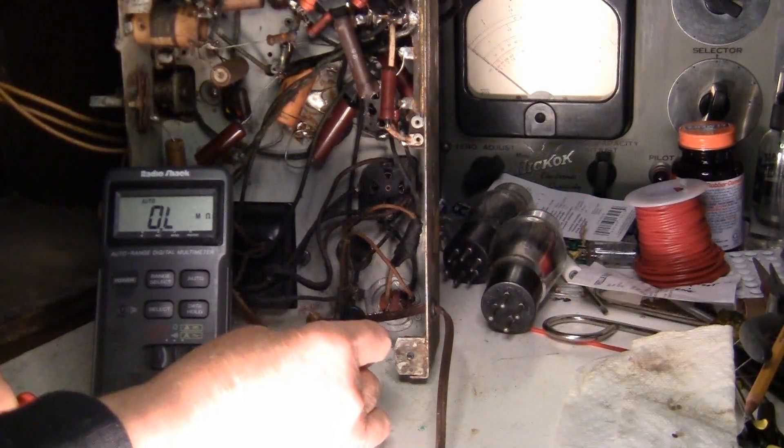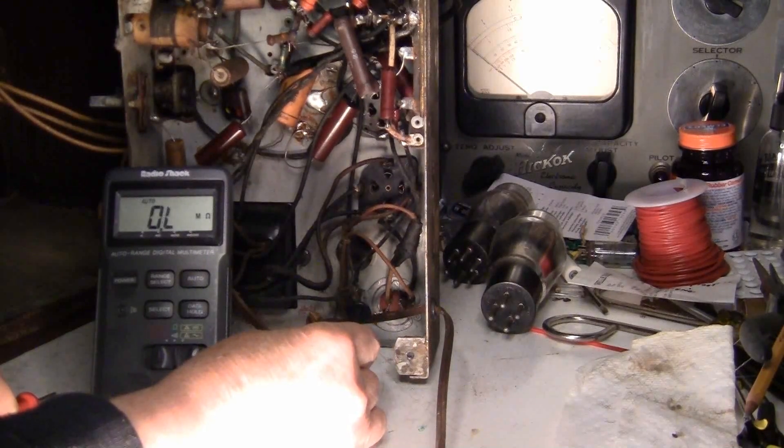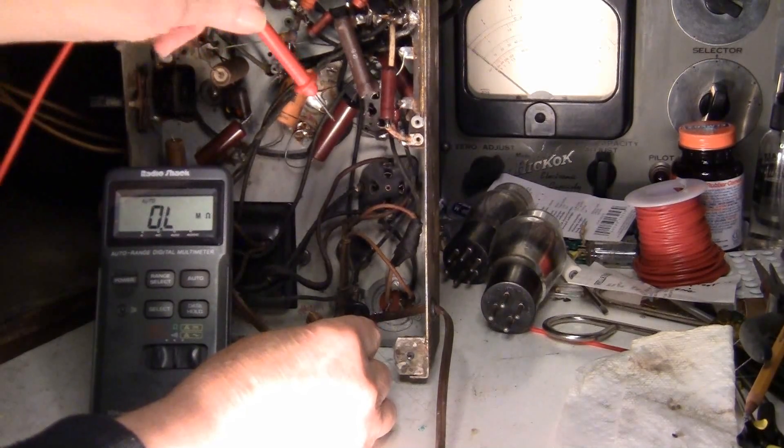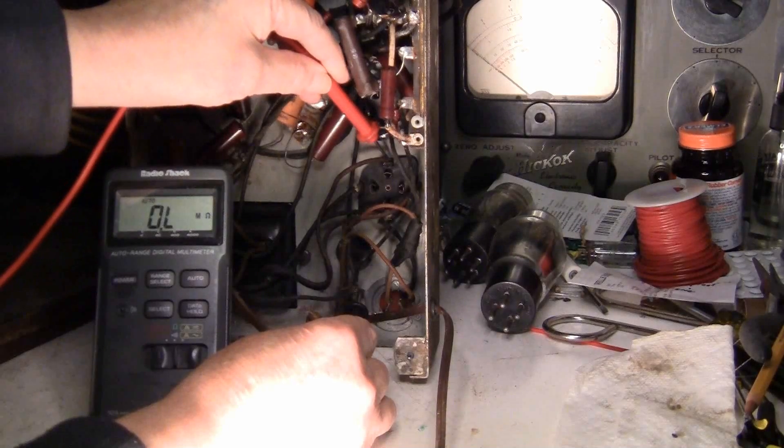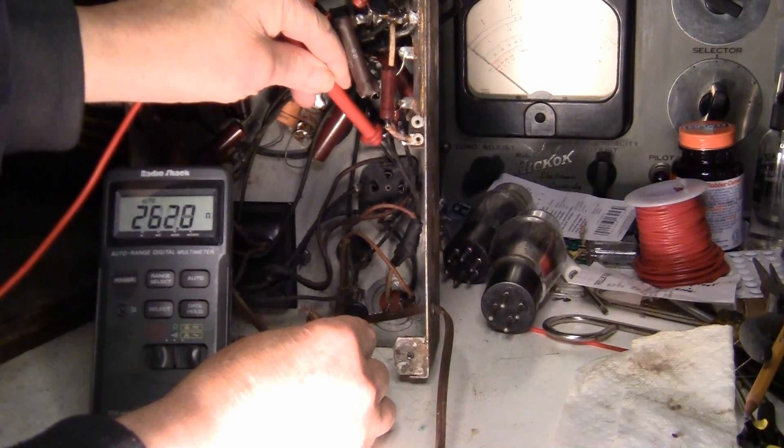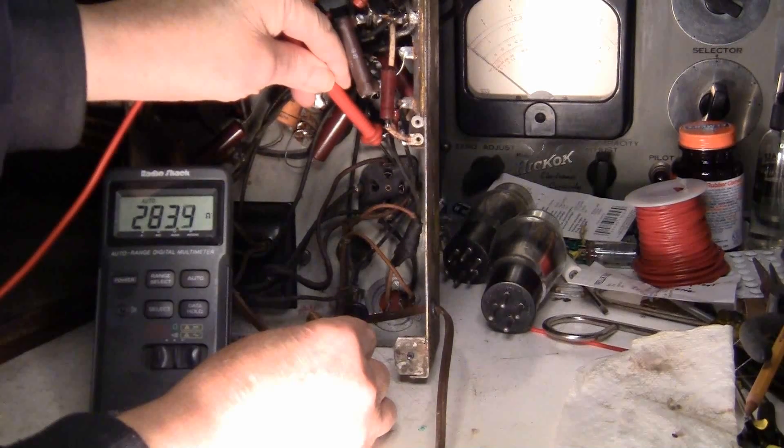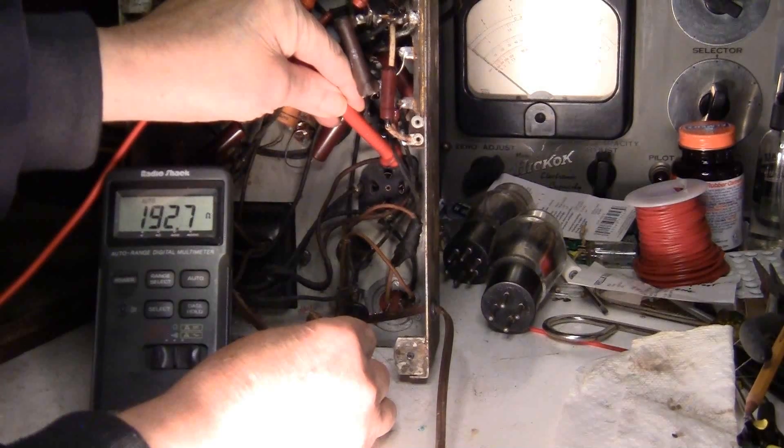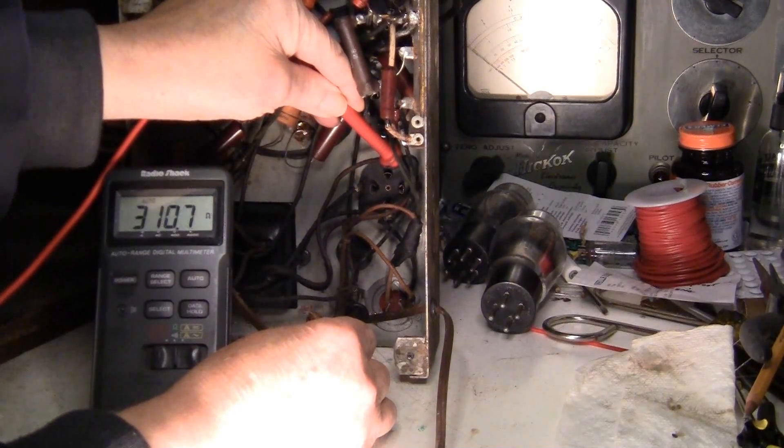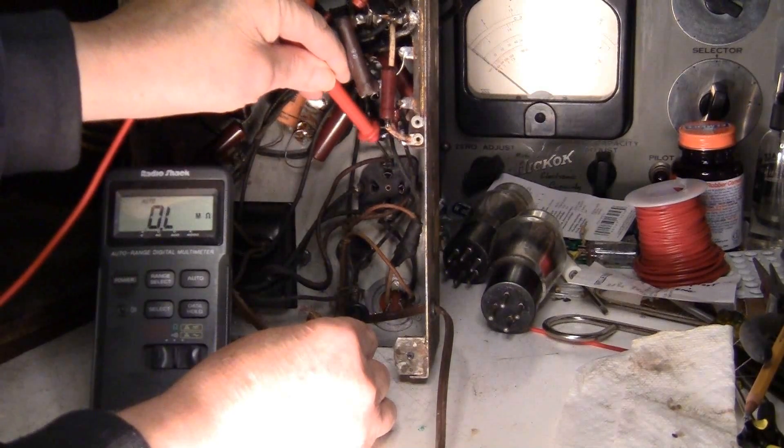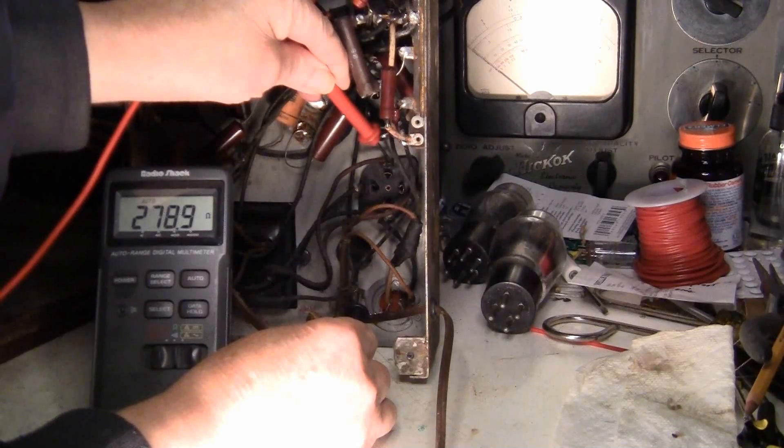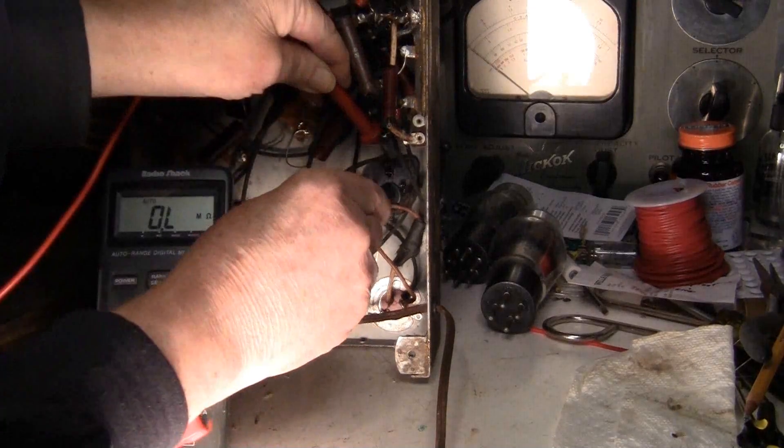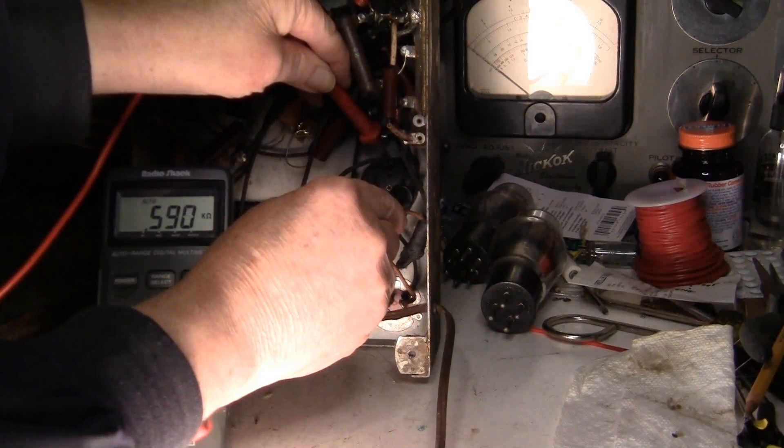Now this center tap is not wired right. Somebody's rewired it. It should go through a 300 ohm resistor, but here it's going to ground. While I'm here I'm going to test between the center tap and both sides of the plates of the 80. It says 310, and this side is 283. Across that will be about the sum.